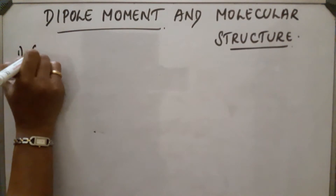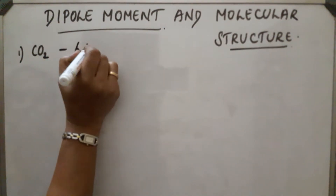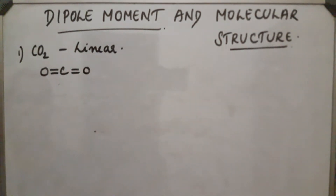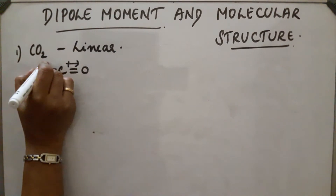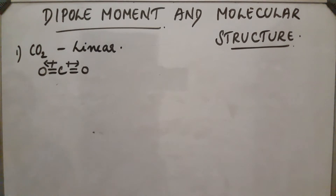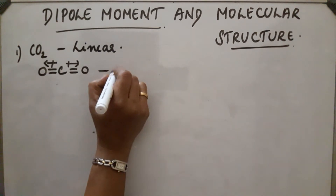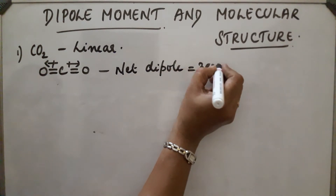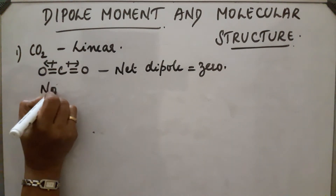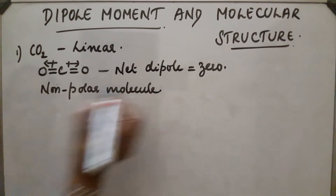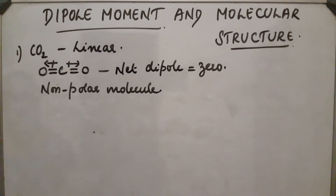First example: carbon dioxide. The shape of carbon dioxide is linear. In this case, the dipole will be in opposite directions along each C=O bond. Since they are equal and in opposite directions, the dipoles cancel each other and the net dipole will be 0. So carbon dioxide is a non-polar molecule. In a linear molecule, the bond angle is 180 degrees.